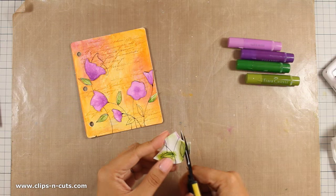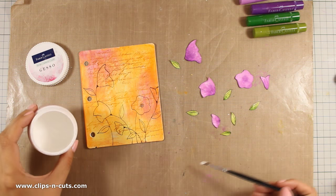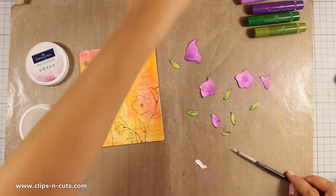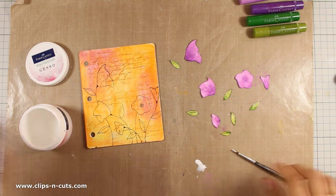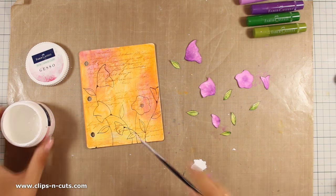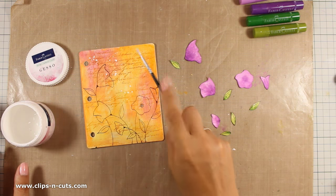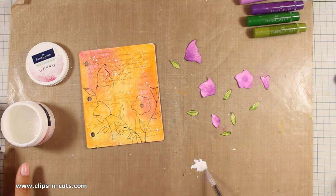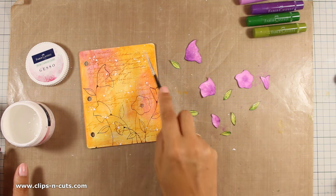Before I stick everything down, I'm going to add some splashes. To do so, I'm using a very thin brush and gesso. I've watered down the gesso so it is more liquid, and I'm adding a few splashes on my page.